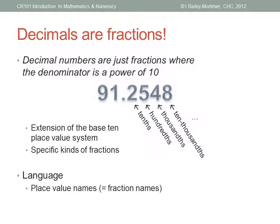We tend to say decimal numbers by simply reading off the digits. Ninety-one point two-five-four-eight. But if we do want to refer to a specific digit, we use its place value, which is just the name of a fraction. Five-hundredths, round off to the nearest thousandth, and so on.